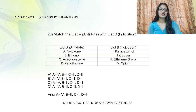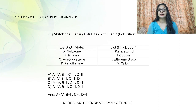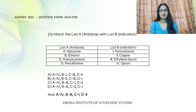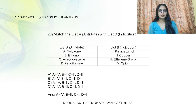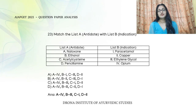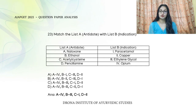The next match the following question is from forensic toxicology, matching antidotes to their indications. Naloxone is used for opium poisoning. Ethanol is used for ethylene glycol poisoning. Acetylcysteine is used for paracetamol poisoning. Penicillamine is used for copper poisoning.